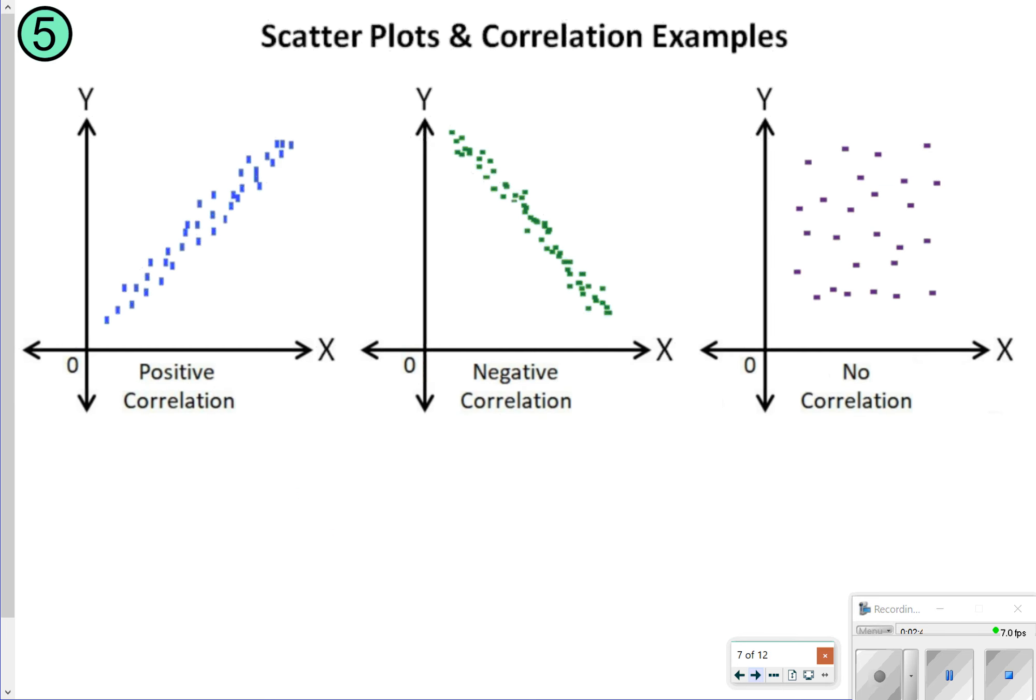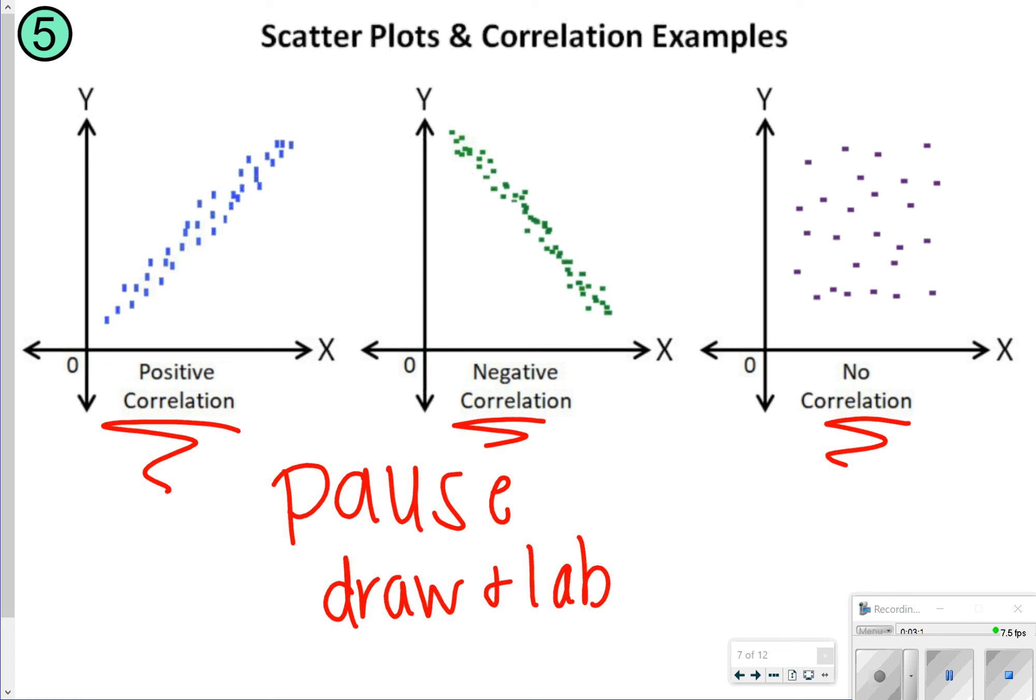What we have next are different scatterplots and correlation examples. We've already seen a positive correlation. As x increases, so does y. A negative correlation would be, as x increases, y would decrease. And then no correlation, meaning there's no really pattern that you see, or there's no connection between the two sets of data. Let's go ahead and take time now to pause the video here, so you can write down what a positive correlation, a negative correlation, and a no correlation look like. Make sure you draw and label the following graphs.